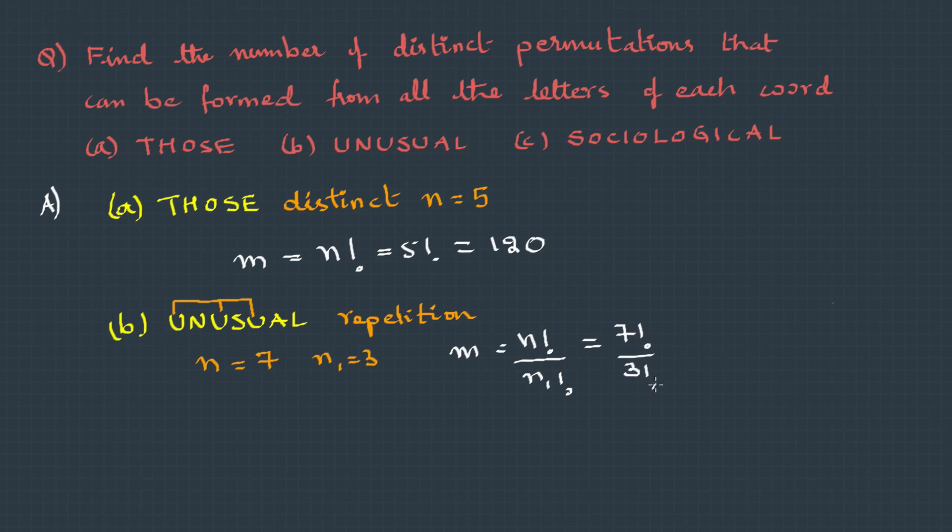If you move on to the third one, SOCIOLOGICAL, here also the objects are repeated. The total number of objects is 12. Here we see the O has been repeated three times, and C has been repeated twice, even I has been repeated twice, L is also repeated twice.